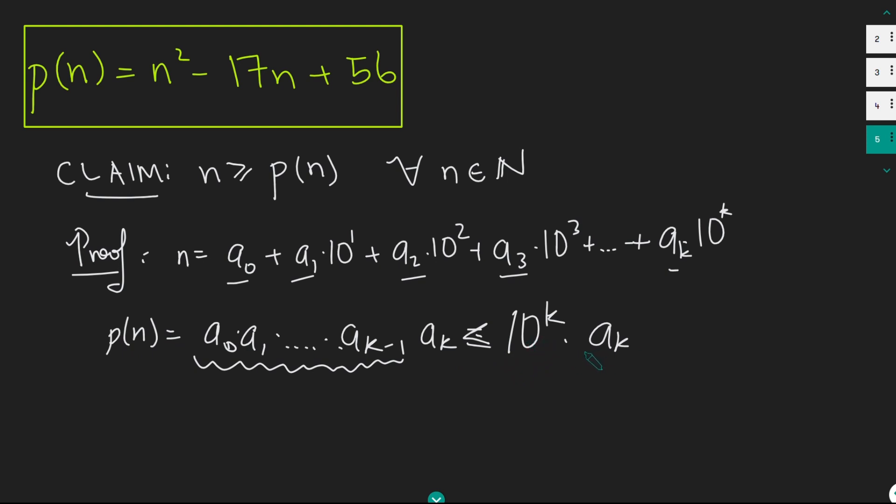Okay, but what is 10 to the k times ak? Well, that's clearly going to be this term here. And if n is all of this stuff plus ak times 10 to the k, all of this stuff here is going to be at least 0. It could be 0, but it can't be negative. And so therefore, 10 to the k times ak is less than or equal to n. And we get that p of n must therefore be less than or equal to n. And we've proved our claim in basically just two lines here. Amazing. So we get that n is bigger than or equal to p of n for all positive integers n. And we're going to use that to help us solve this equation up here.